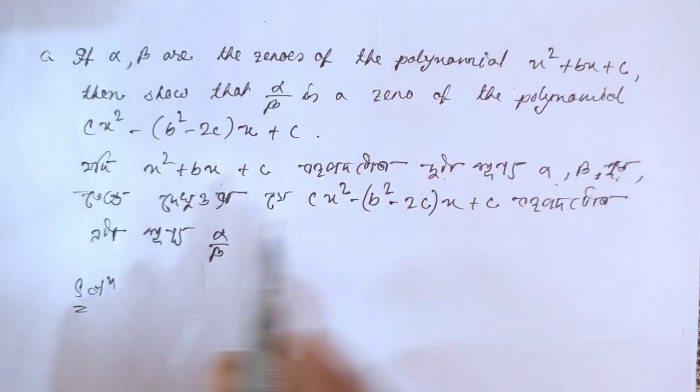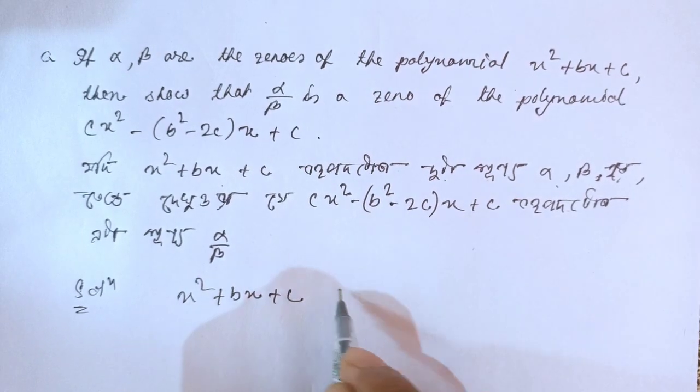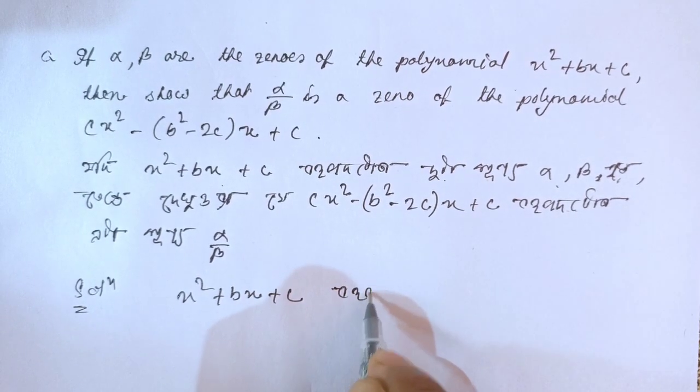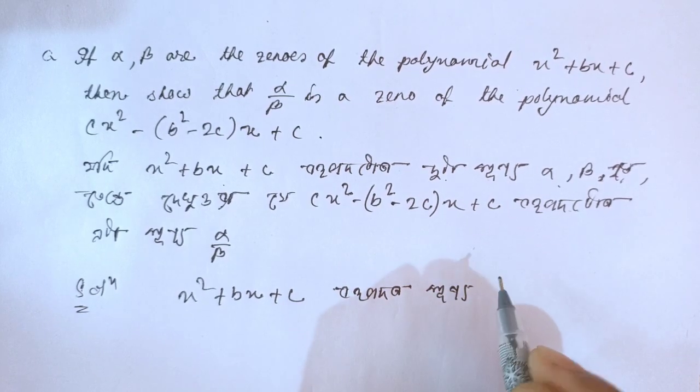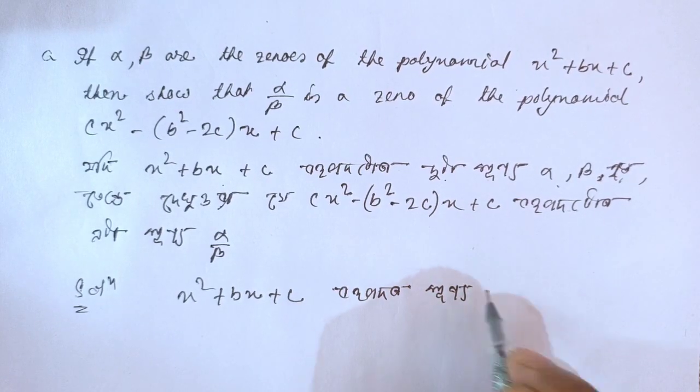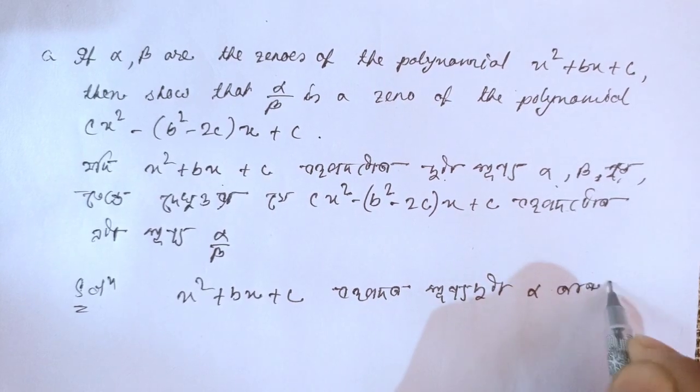Let's solve this question. The zeros of the polynomial x² + bx + c are α and β. So what are the zeros? The zeros are α and β.